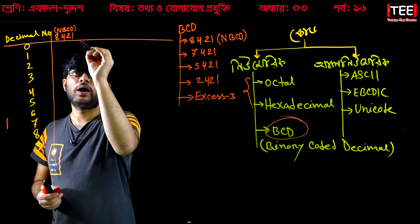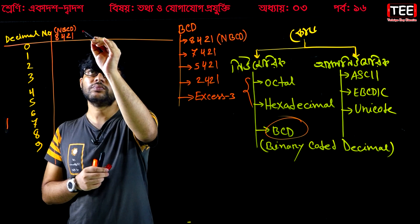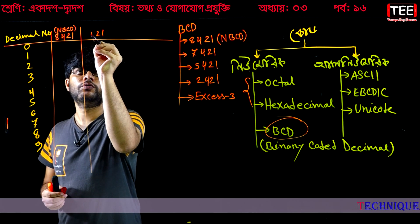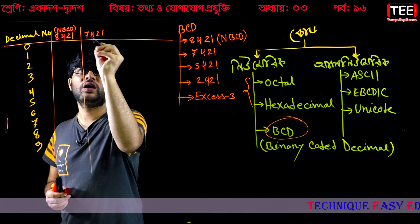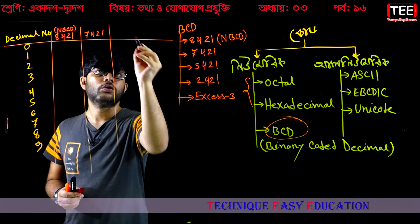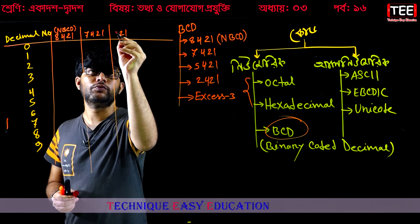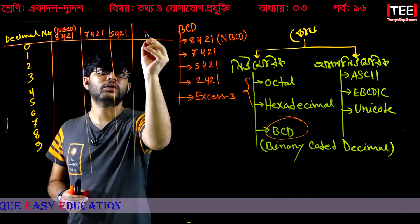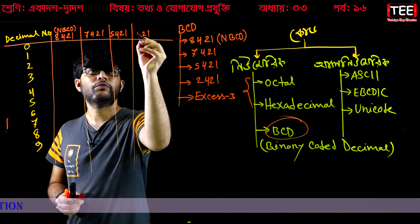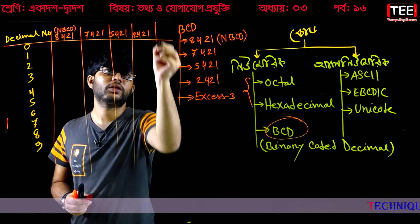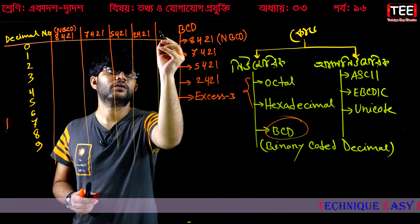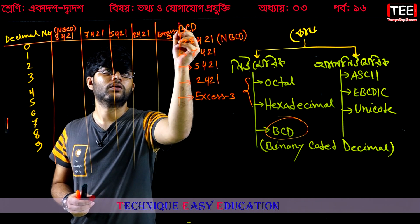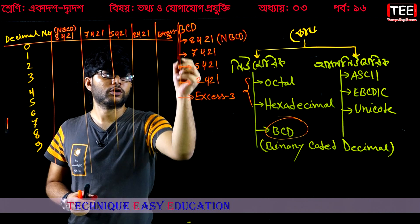Another code format is 1, 2, 4, 7. Another code is 1, 2, 4, 5. Another code is 1, 2, 4, 2. And another is XS3 — Excess-3. These are the different BCD-type codes we have.